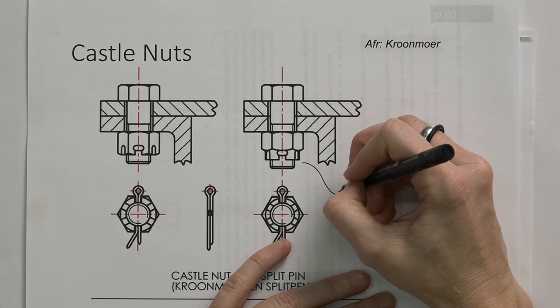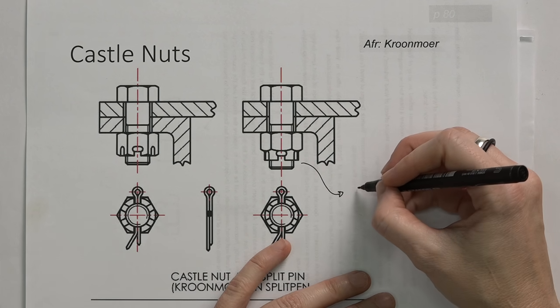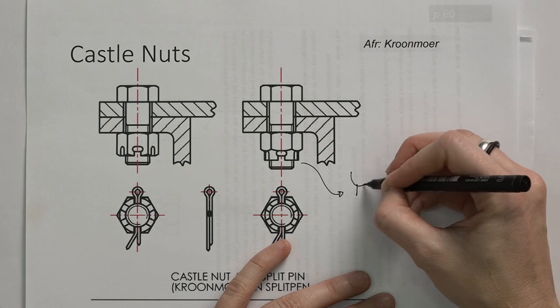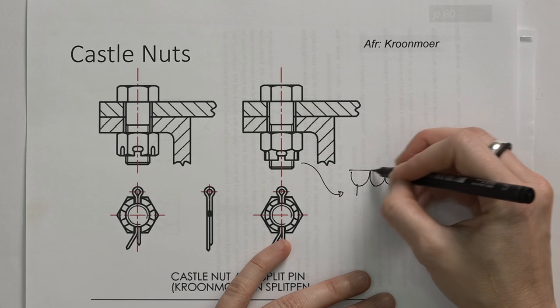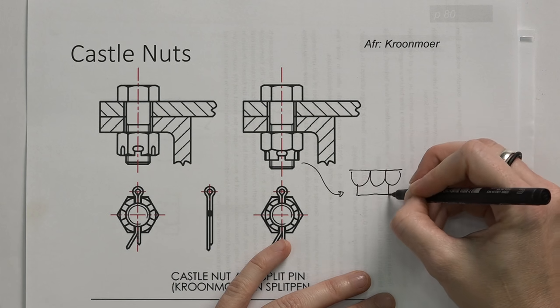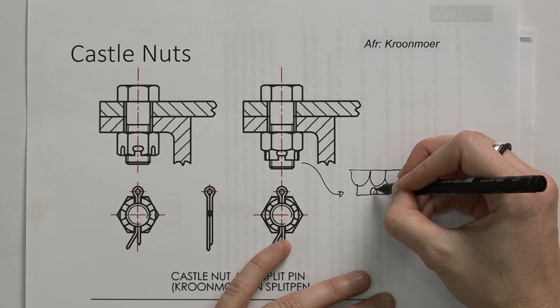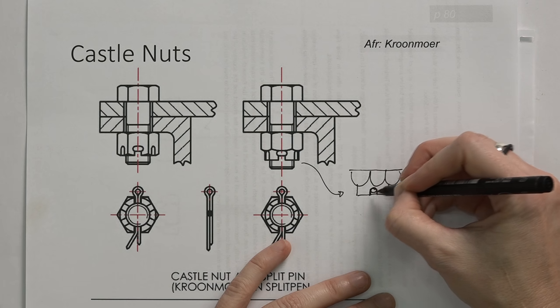Just to give you an indication of how this will be drawn incorrectly, it's often you have, if you have this part of the castle nut and there's the groove there, sometimes they just draw a split pin in like that.